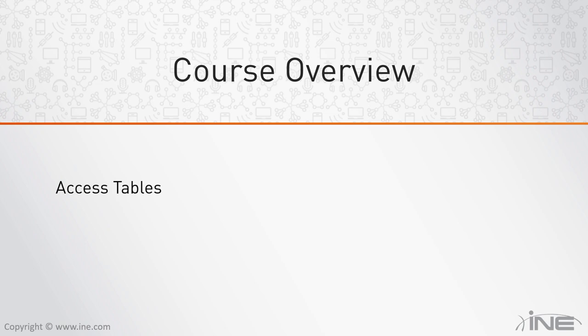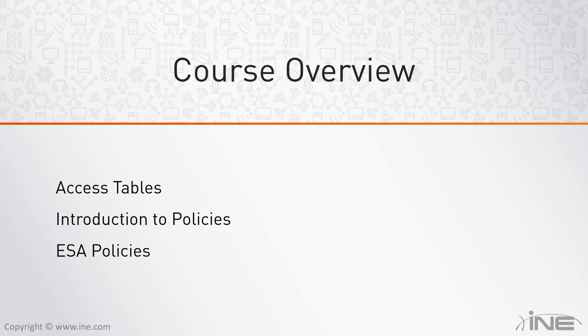Then we're going to move on and take a look at host and recipient access tables, two major important components of the ESA. Next I'm going to make an introduction to ESA policies and policy engines, so we know what type of inspections can be performed on emails. I'm then going to discuss most of the policy engines one by one, along with configuration examples, to finally finish our discussion with message filters — one of the more advanced features available on the ESA.